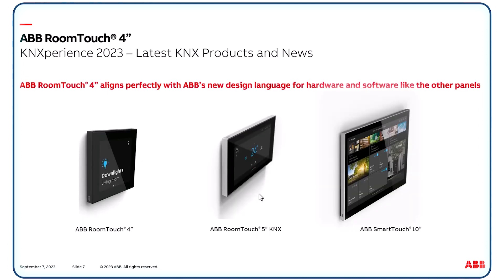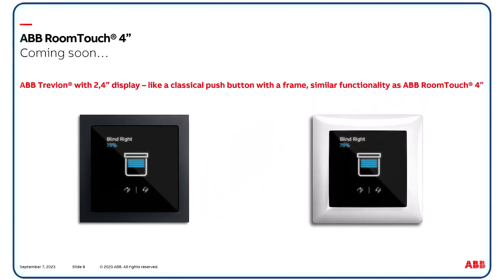The ABB Room Touch 4-inch is not the only touch panel we have. This new device fits perfectly with our existing 5-inch Room Touch and the 10-inch Smart Touch — same design, same way of operation, and the parameterization in the ETS is also almost the same. Allow me to also give you a preview of a further product: the ABB Trivion with a 2.4-inch display, with the possibility to combine it with frames from our various wiring accessory ranges like Karat or Solo. Functionality and operating principle is similar to the Room Touch 4-inch, so it really looks like a push button and fits with other wiring accessories like sockets in the room. It will be available soon, still this year.